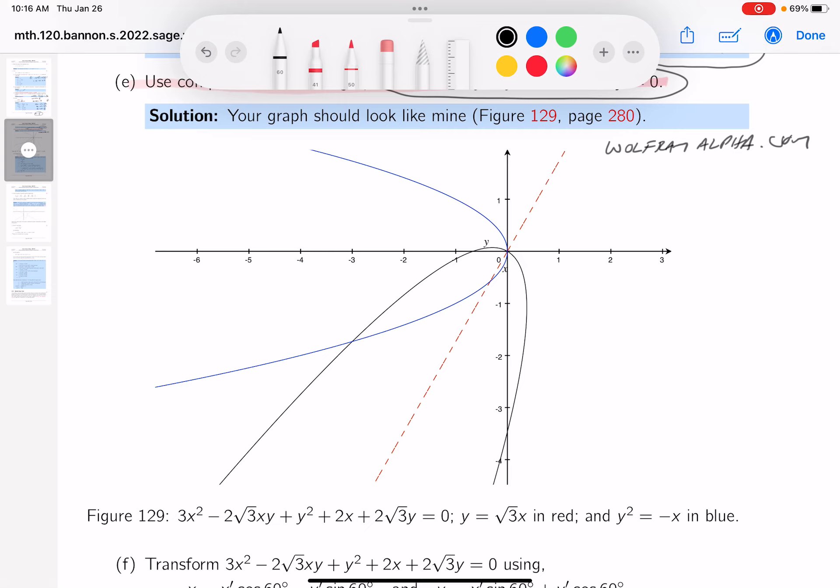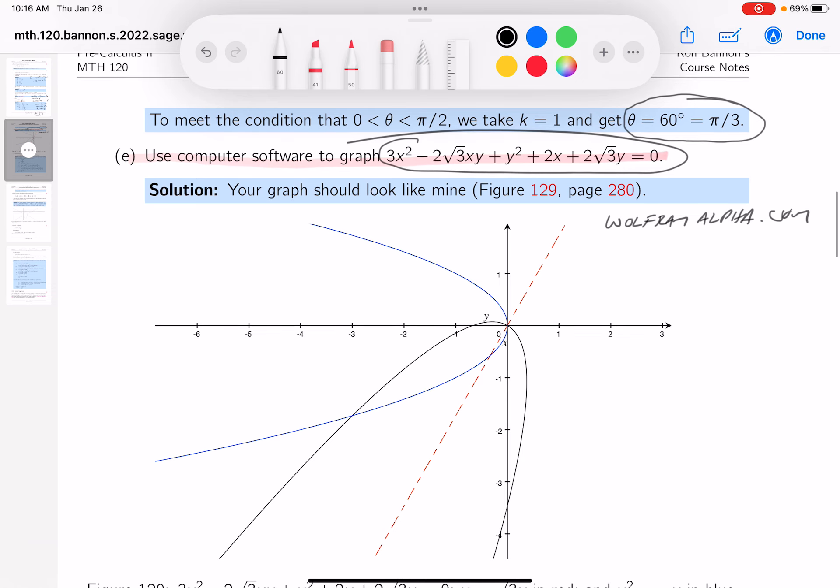One thing I put down is the parabola that they want me to graph, which is a rotated parabola, by the way. And I put down the one that's not being rotated. This one over here. And then it rotated 60 degrees. That's what we did over here.